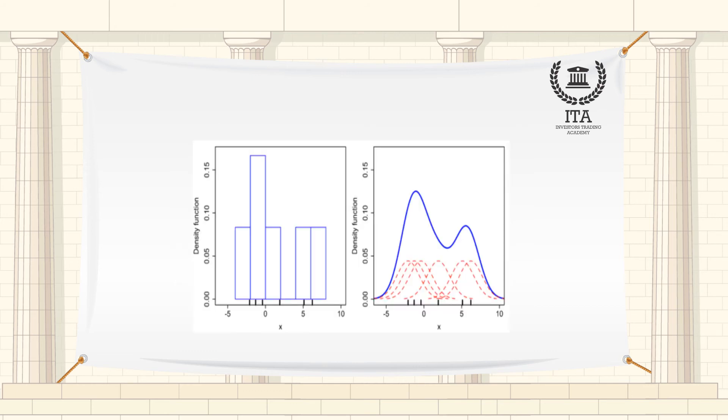A histogram can be thought of as a simplistic kernel density estimation, which uses a kernel to smooth frequencies over the bins. This yields a smoother probability density function, which will in general more accurately reflect the distribution of the underlying variable.